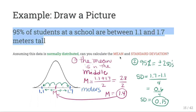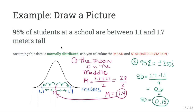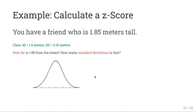We could also go the other direction: knowing the mean is 1.4 and the standard deviation is 0.15, we could find where 95% of the people are located and arrive back at 1.1 and 1.7.